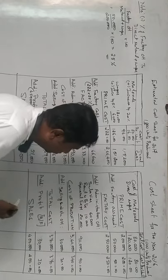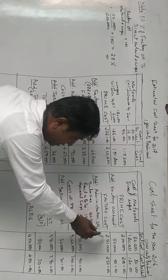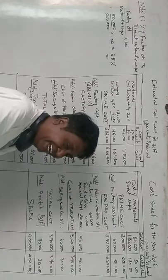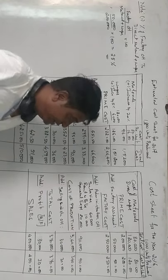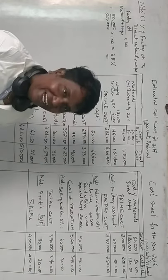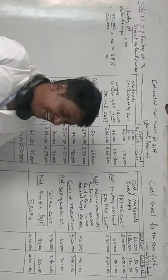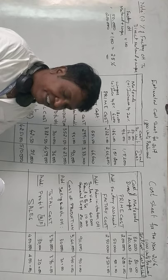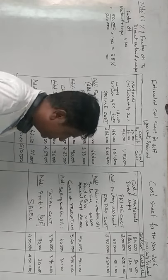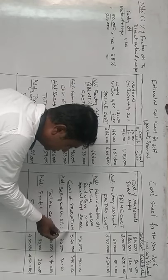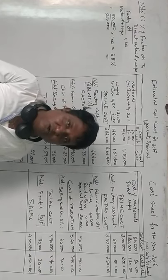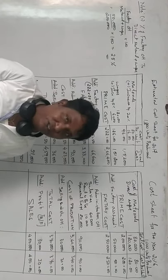Total cost of production: once you add administration overhead to factory cost, you will get cost of production. The total cost of production is 3,40,000 rupees. Adding selling and distribution overhead — selling expenses of 30,000 rupees — to the cost of production, you will get total cost. There is no opening stock or closing stock of finished goods given, so we get a total cost.